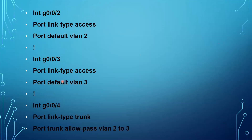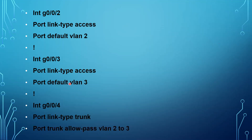The second step is port assignment. Move to port 2 — interface GigabitEthernet 0/0/2 — and specify the type of this port as access by typing 'port link-type access', which is equivalent to 'switchport mode access' in Cisco. Then 'port default vlan 2', which assigns this port to VLAN 2 — equivalent to 'switchport access vlan 2' in Cisco. Do the same for port 3: interface GigabitEthernet 0/0/3, port link-type access, port default vlan 3.